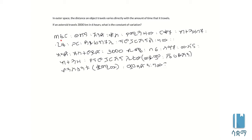The problem involves a directly proportional relationship. An asteroid travels a certain number of kilometers in a certain number of hours — we need to find the constant of proportionality, or constant of variation.